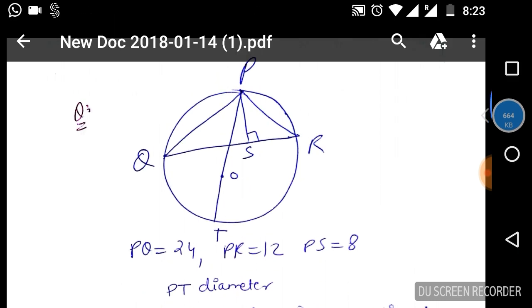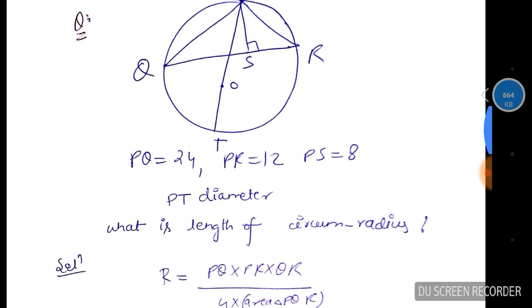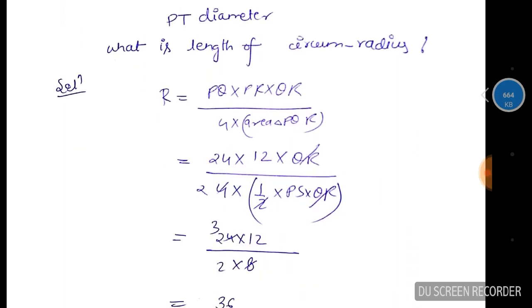So PQ into QR into PR upon 4 area. PQ is 24, PR is 12. Area is half base into height - QR is base and PS is height. So half PS into QR. QR will cancel. Now calculate.